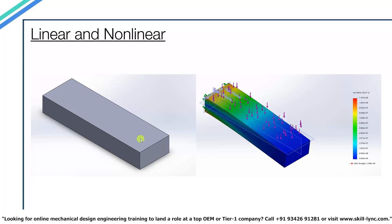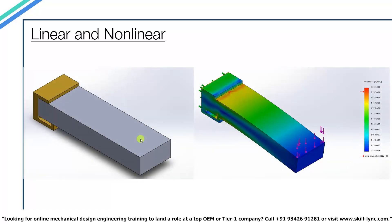Now consider a second example: a similar beam but with a different design. When a certain load is applied on the top, after a certain amount of deflection the bottom part of the beam makes contact with a support bracket. This changes the overall output of the simulation because we are now simulating both the cantilever and the bracket. In such situations where the contact point changes during simulation, we use a nonlinear approach, since a linear approach would not properly update the contact points and would yield bad results.